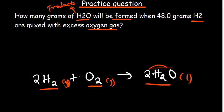The key term 'excess' means oxygen is more than enough, so the limiting reagent is hydrogen. We always use the limiting reagent to determine how much product was formed and how much of the other reactant reacted. In this case we focus on the 48 grams of hydrogen to determine the grams of water produced.